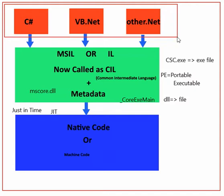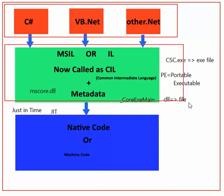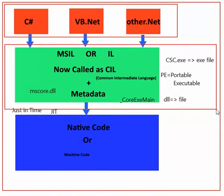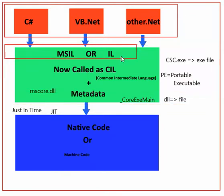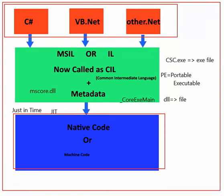The first blocks are C#, VB.NET, and other .NET languages. The next block is MSIL, which is a large one, and the last and final stage is native or machine code. Now we have to start — we have to write the source code in C#, then compile it using the C# compiler.